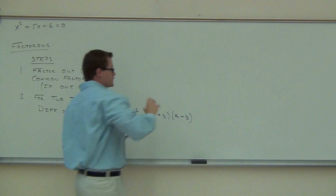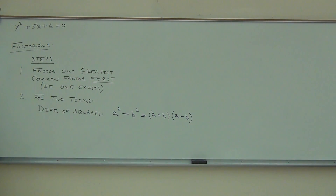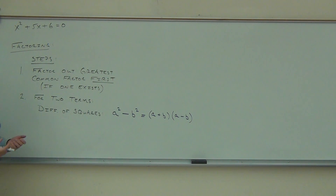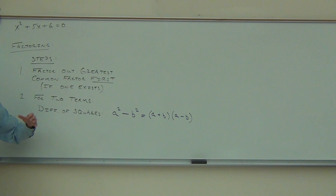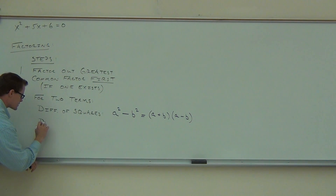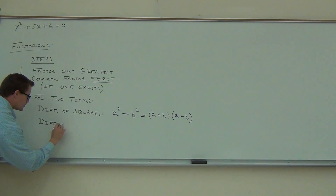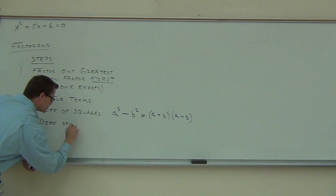There are only two other forms you can have with two terms and still factor. The first one is a difference of cubes. The difference between squares and cubes? The cube means a power of three; the square means a power of two. So let's talk about a difference of cubes.